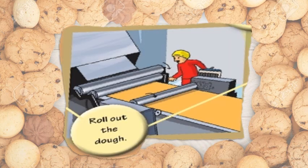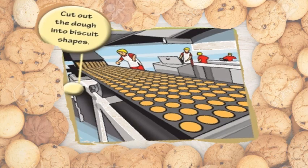The next step is to roll out the dough — see, it is flattened. The dough is flattened in the machine. Then cut out the dough into biscuit shapes. Your dough is cut into biscuit shapes. Maybe it is oval, maybe rectangular, maybe square — whatever shape you want to give, they give the shapes to the dough here.